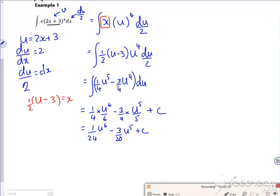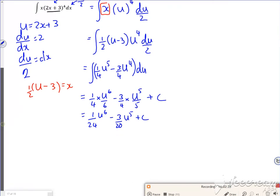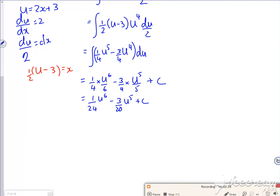There's no limits in this, so I'll replace the u with the 2x plus 3. So 1 over 24, 2x plus 3 to the 6, minus 3 over 20, 2x plus 3 to the 5.